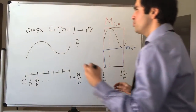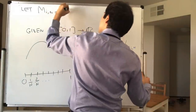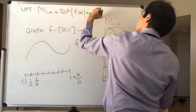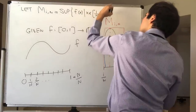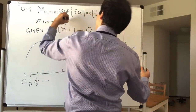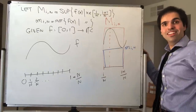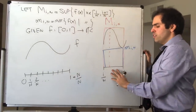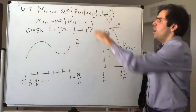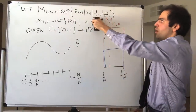To make this precise: let M_i,n be the supremum of f(x) where x is in [i/n, (i+1)/n], and let m_i,n be the infimum of f(x) over the same rectangle. Of course it might be infinity or minus infinity, but we assume f is non-negative — so the infimum is at least zero — and also that f is bounded. Very soon we'll assume f is continuous, so all those numbers are finite.